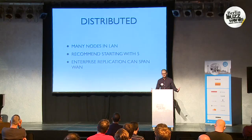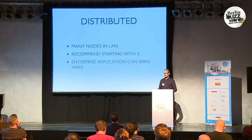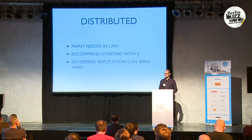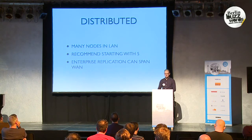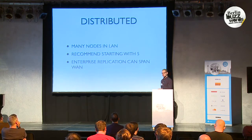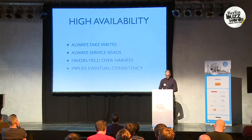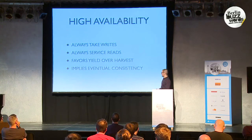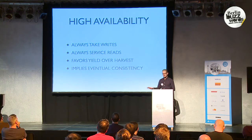That was kind of the idea behind Yokozuna — to replace our current in-house implementation with something like Lucene or Solr, which is proven and has all the features people expect. So it's distributed, meaning many nodes, typically in a LAN. We don't recommend running a given cluster over a WAN because you get unpredictable latencies and more chance of partitions. We typically recommend starting with five nodes. We also have an enterprise version which includes replication that can span a WAN — we call that multi-data center replication, or MDC.